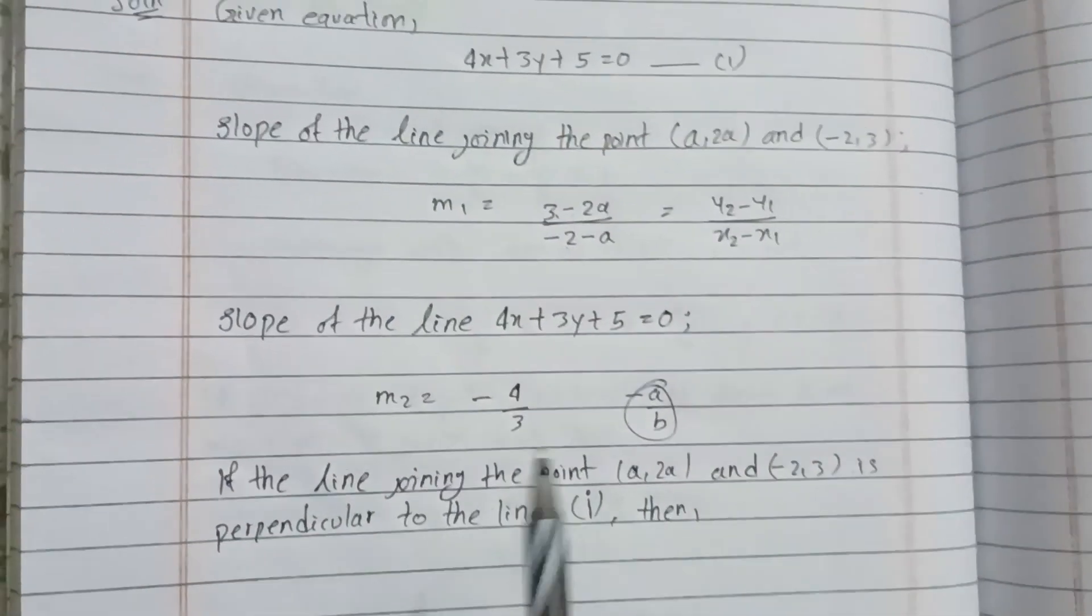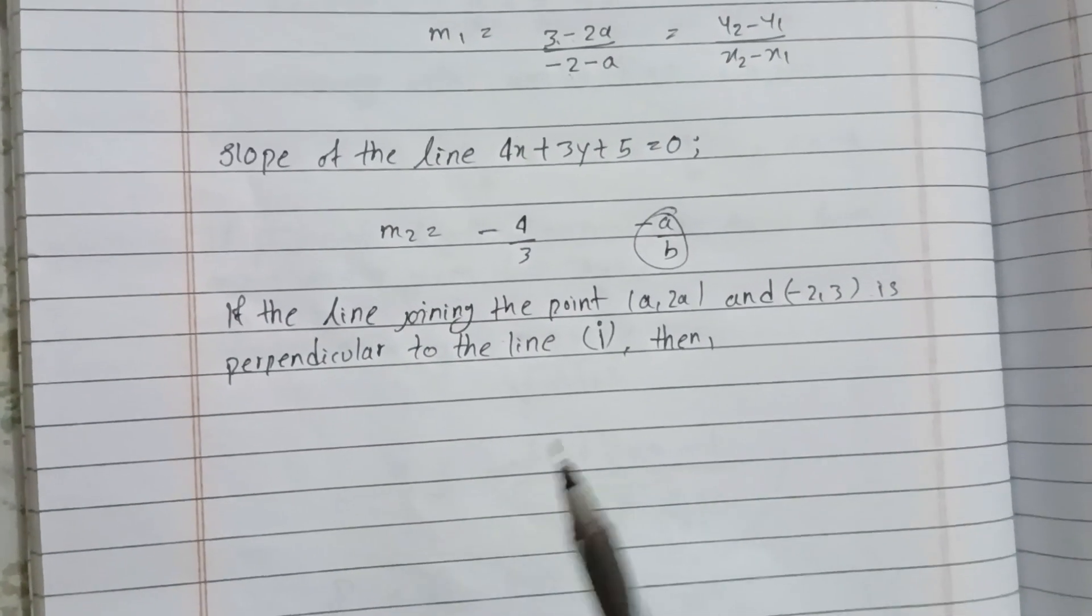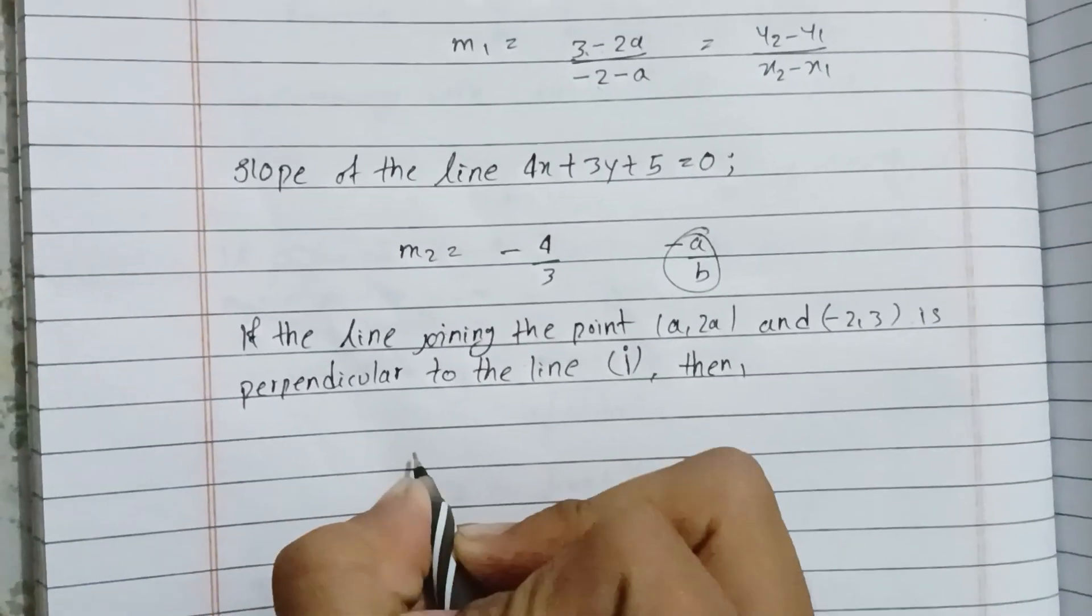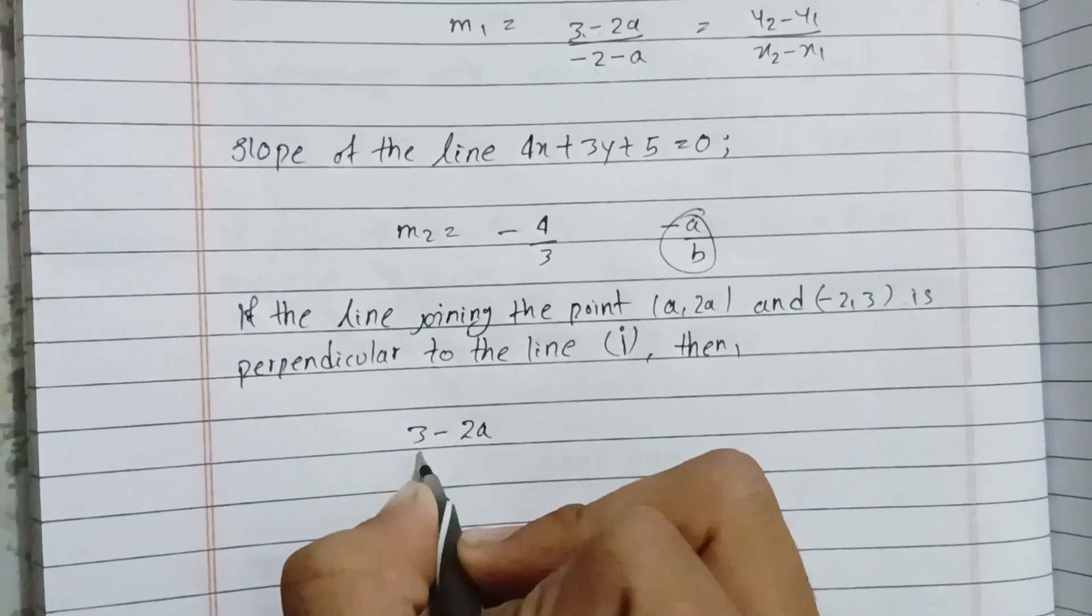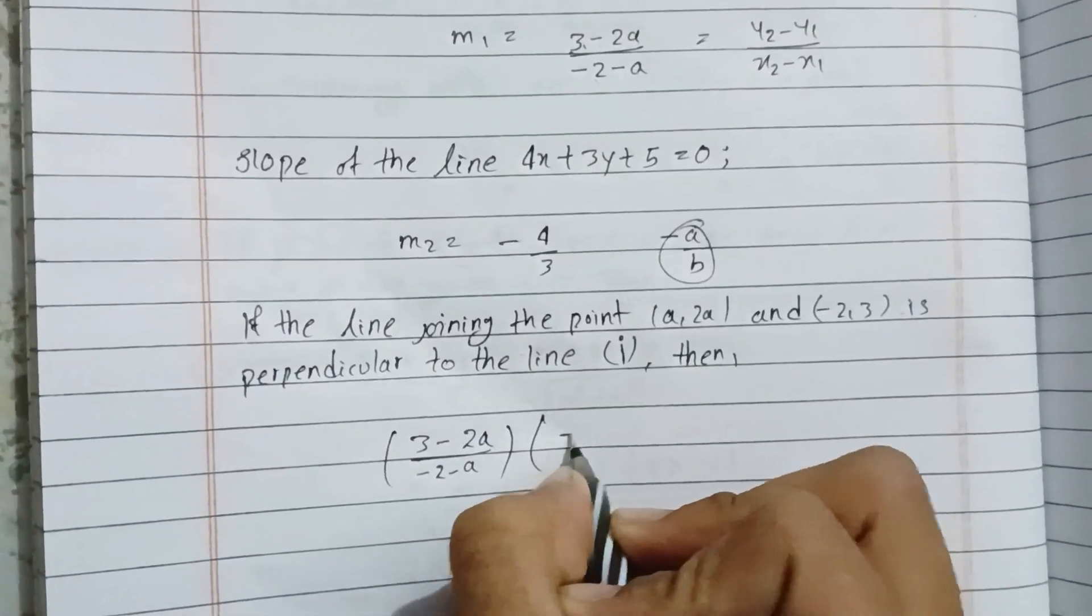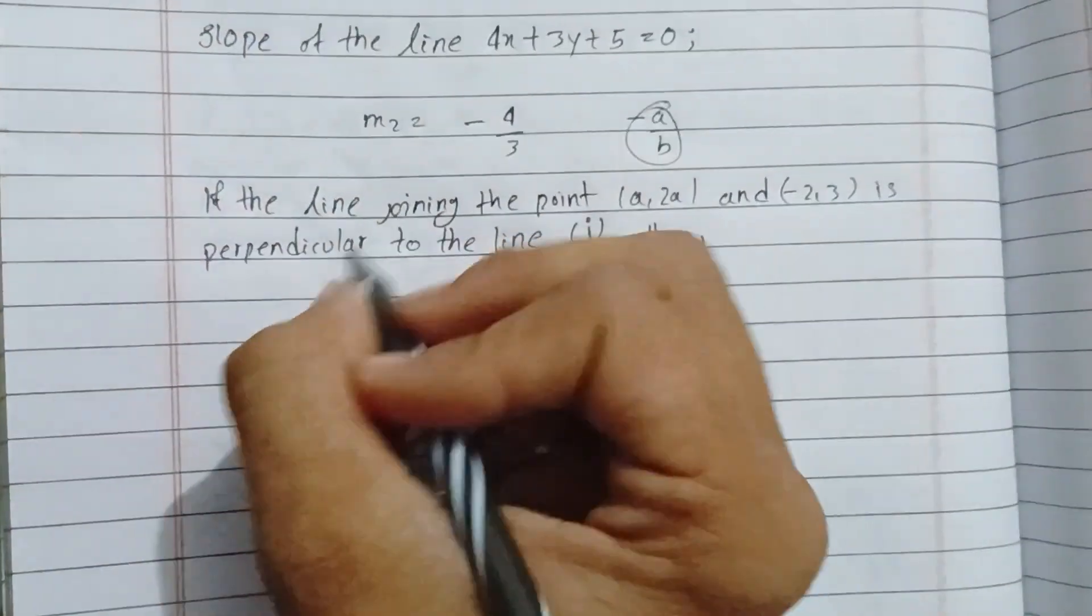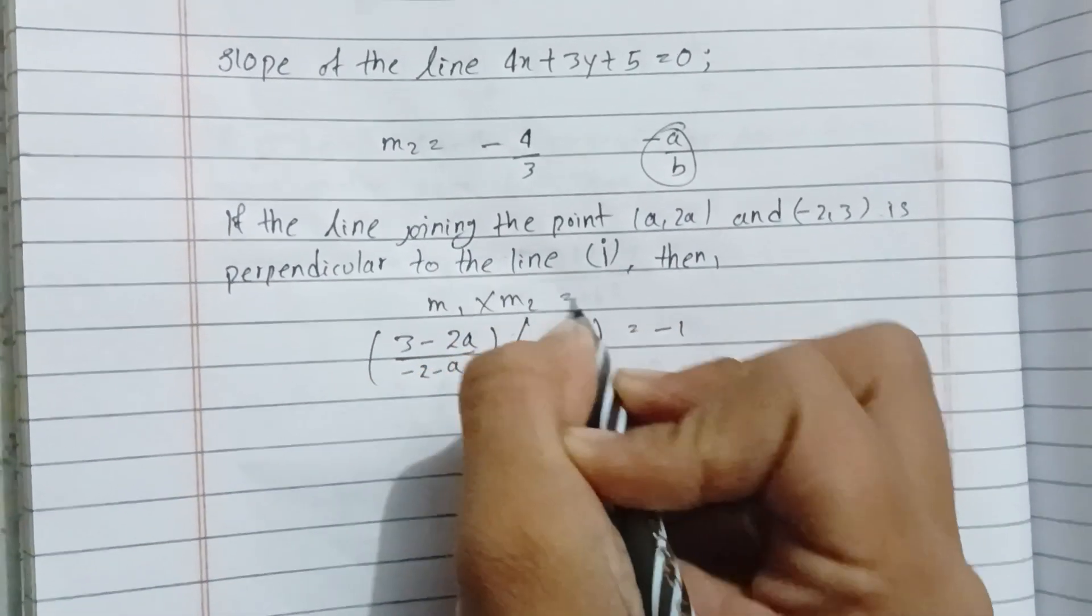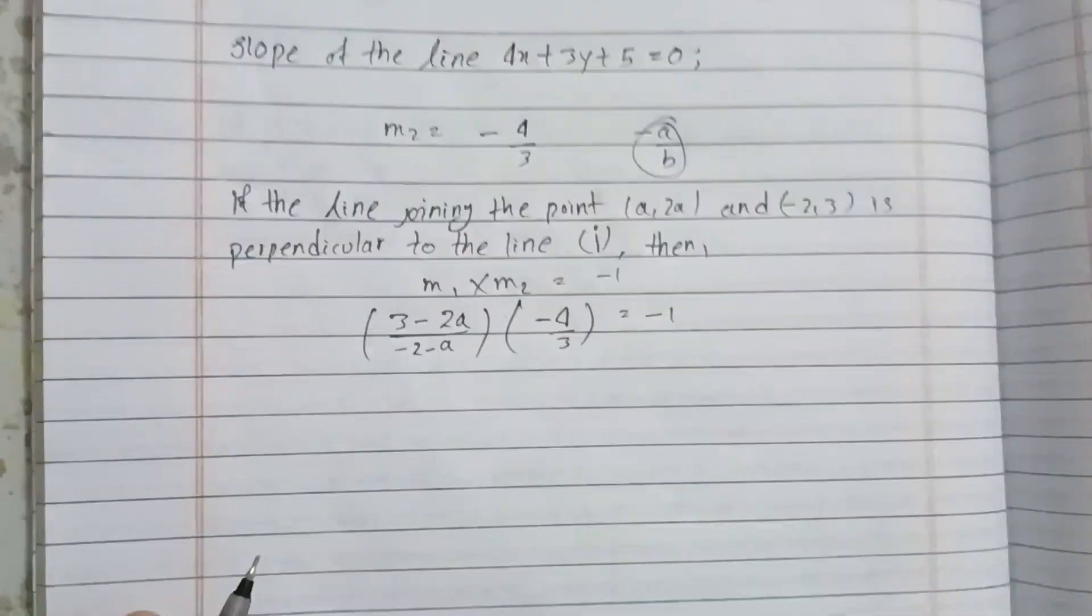For perpendicular lines, m1 times m2 equals -1. This is the relation we use when two lines are perpendicular. So m1 into m2 equals -1.